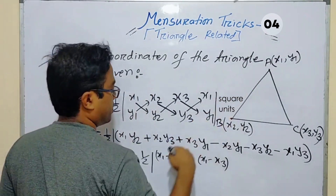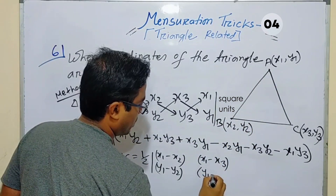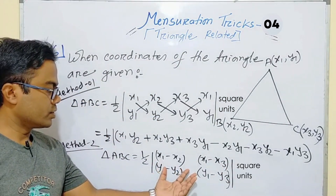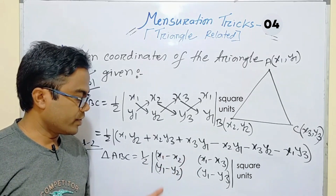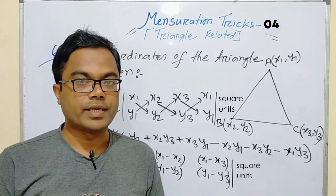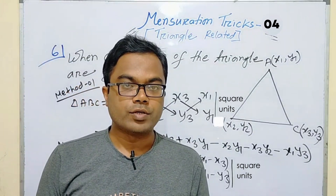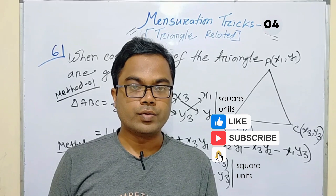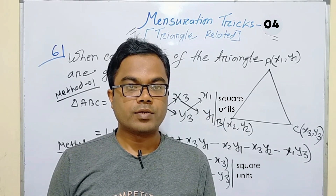Similarly, in method 2 you can write y1 minus y2 and y1 minus y3 — this is also very easy. By applying this formula you can find the area of a triangle in a very short time. I hope you have enjoyed my video. Do subscribe and share if you like it. Allah hafiz, best of luck.